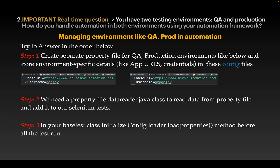There are multiple answers to this question. The first answer: you need to create specific property files for QA and production. The left one is for QA and the right one is for production. In the base URL you can see qa.ajayautomation and production just ajayautomation.com. You hard-code the values you need — here, base URL and username.